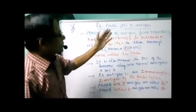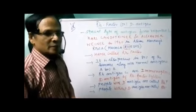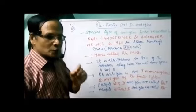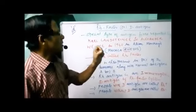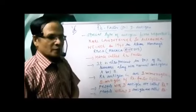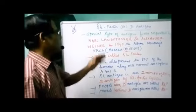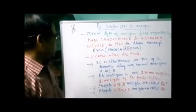It is called D antigen because it is produced by a dominant gene, what is called capital D. Hence called D antigen.